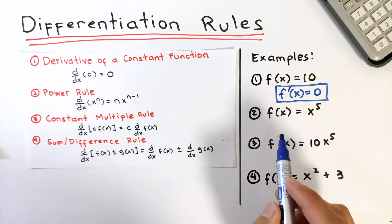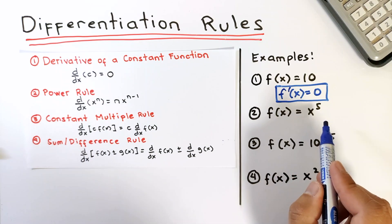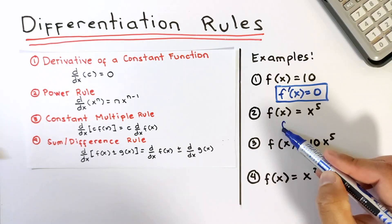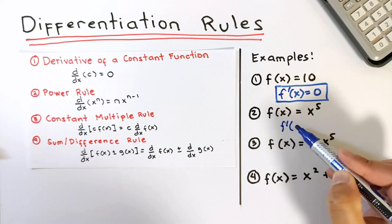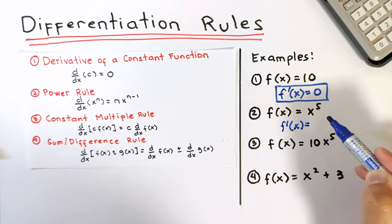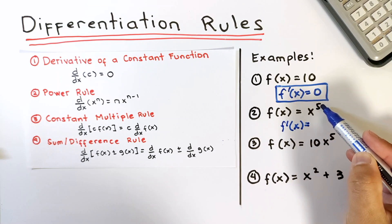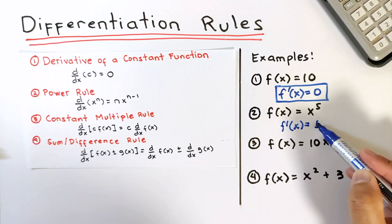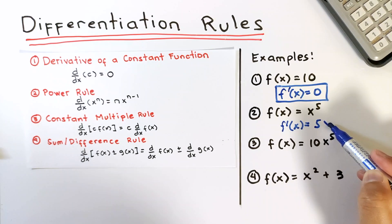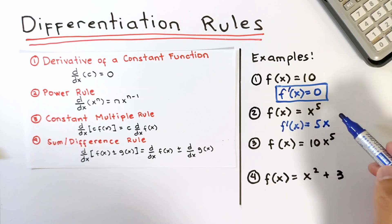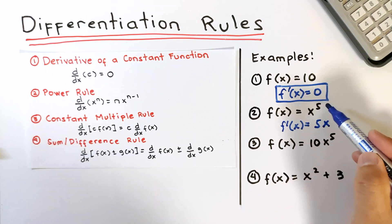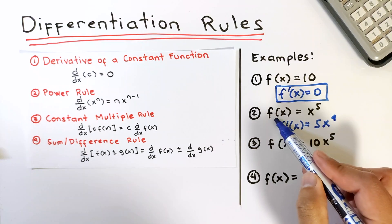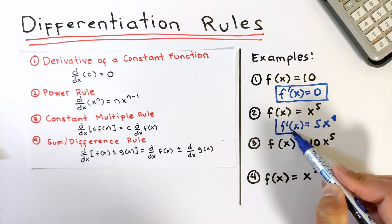Example: f(x) = x raised to 5. Its derivative f'(x) is found by bringing down the exponent as a coefficient — 5 — then copying the variable and subtracting 1 from the exponent, giving 4. So the derivative is 5x raised to 4.